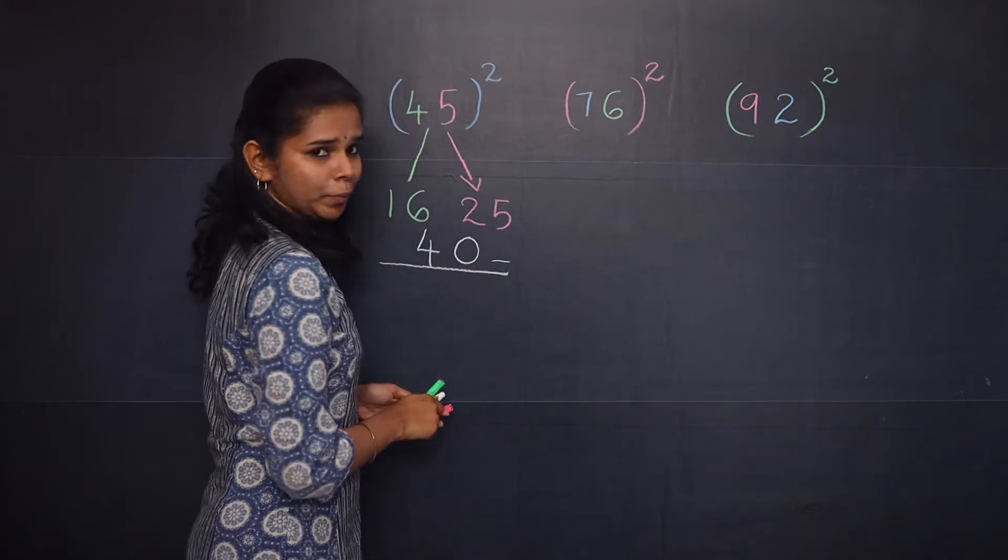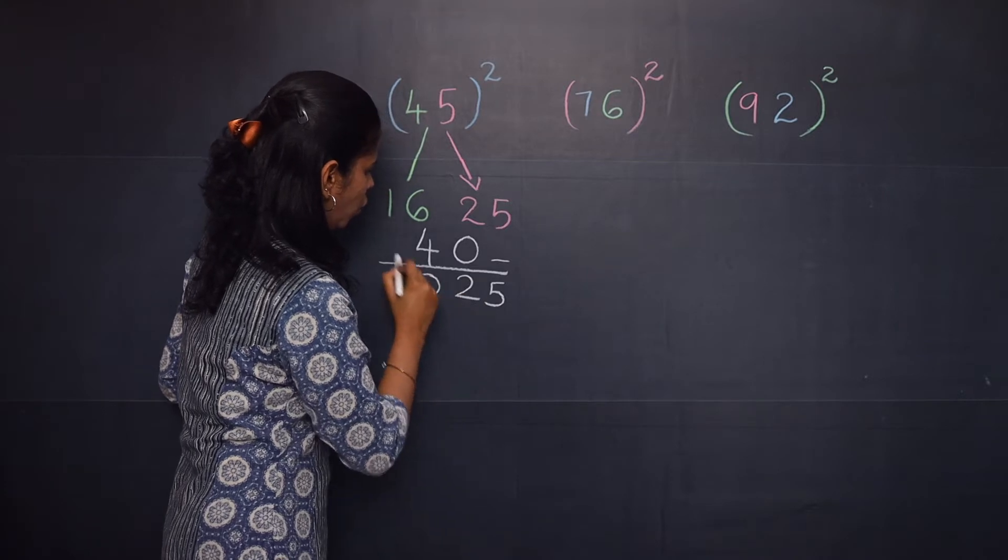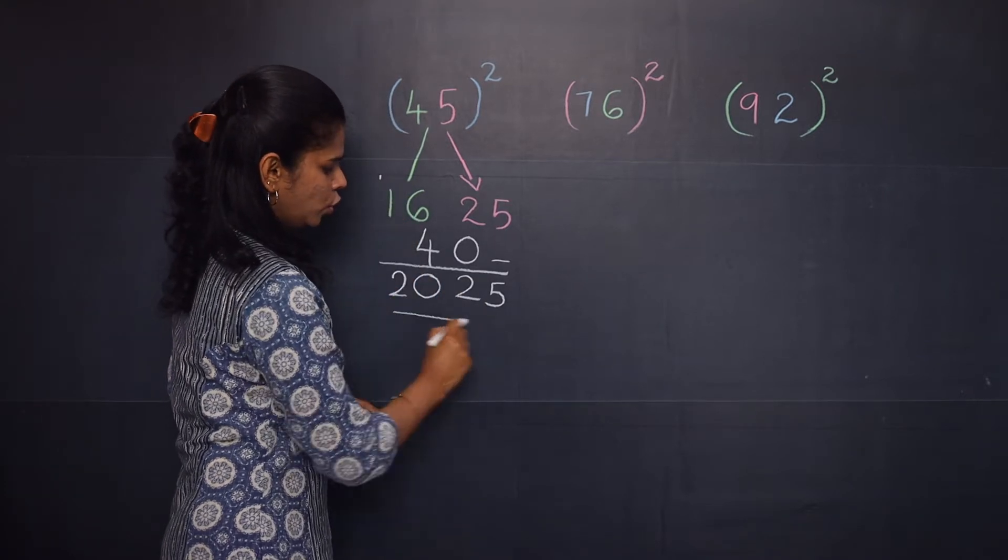Now you will add them. So it will be 5, 2, 0, and 2. So 2, 0, 2, 5.